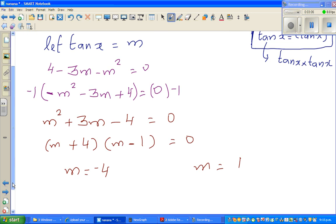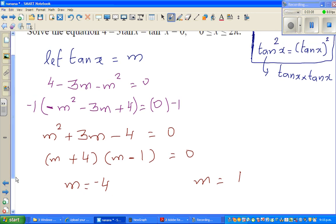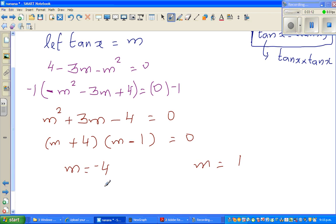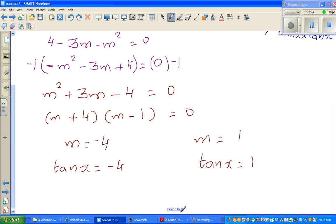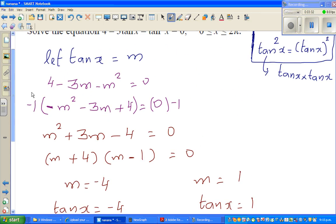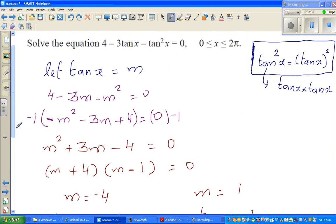Now we have to wake up and say, well, what's m? m is tan x. So you've got two equations now: tan x = -4 or tan x = 1. Now I'm not going to do the long method. I've done many examples on this. I'm going to use a calculator to work out the x values. We are working in radians, so it is between 0 and 2π.